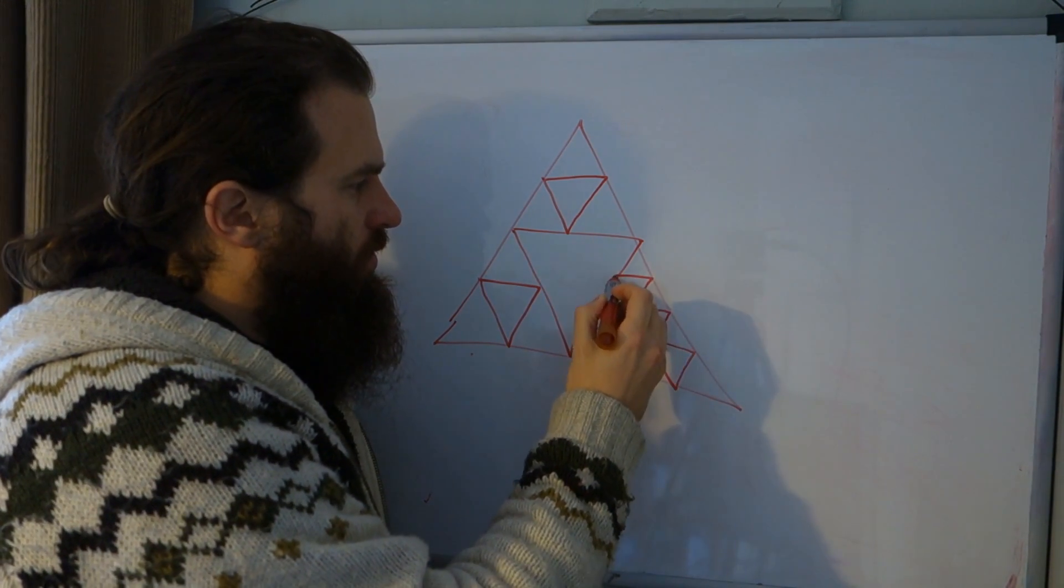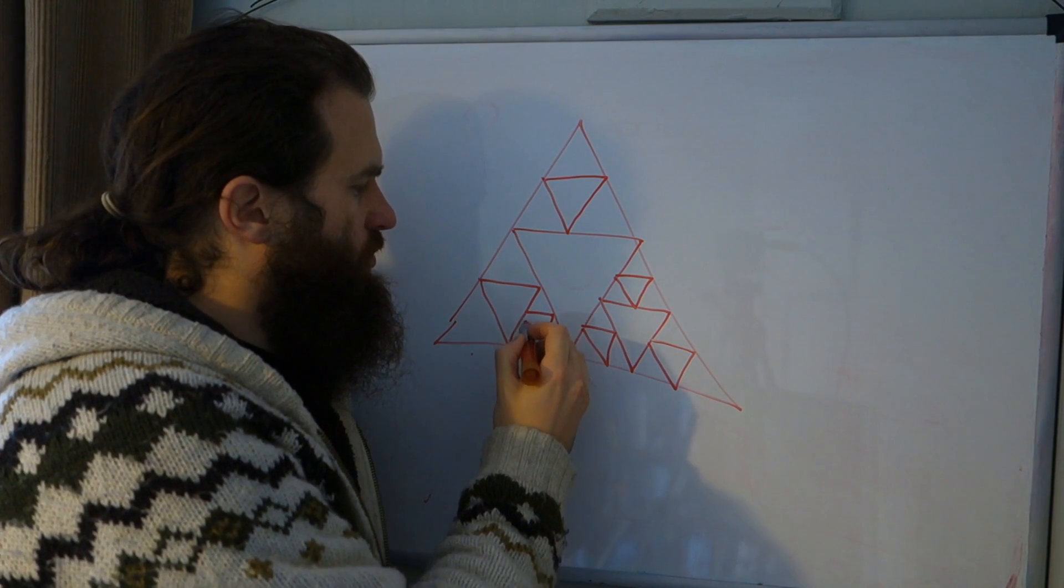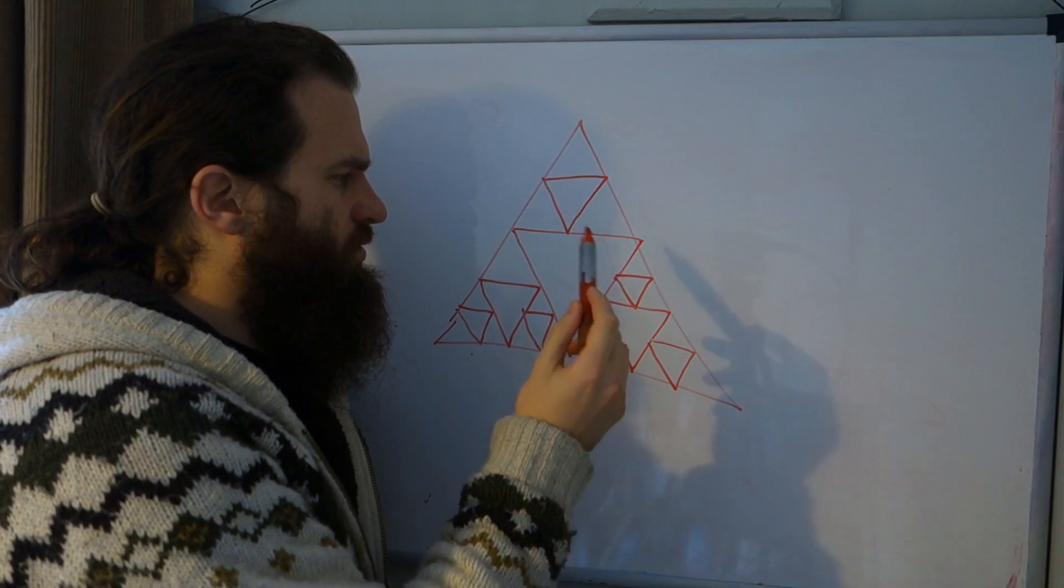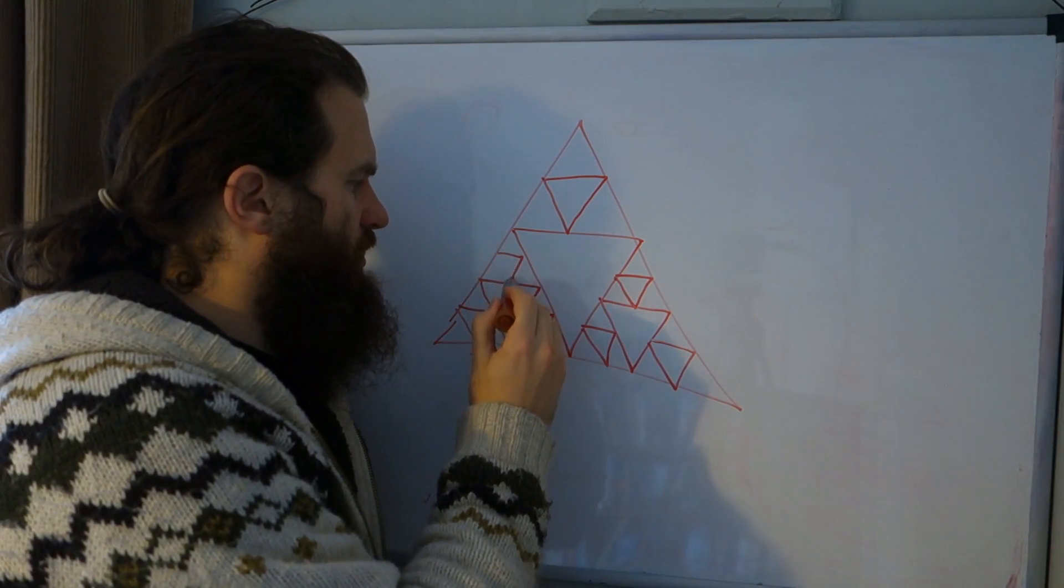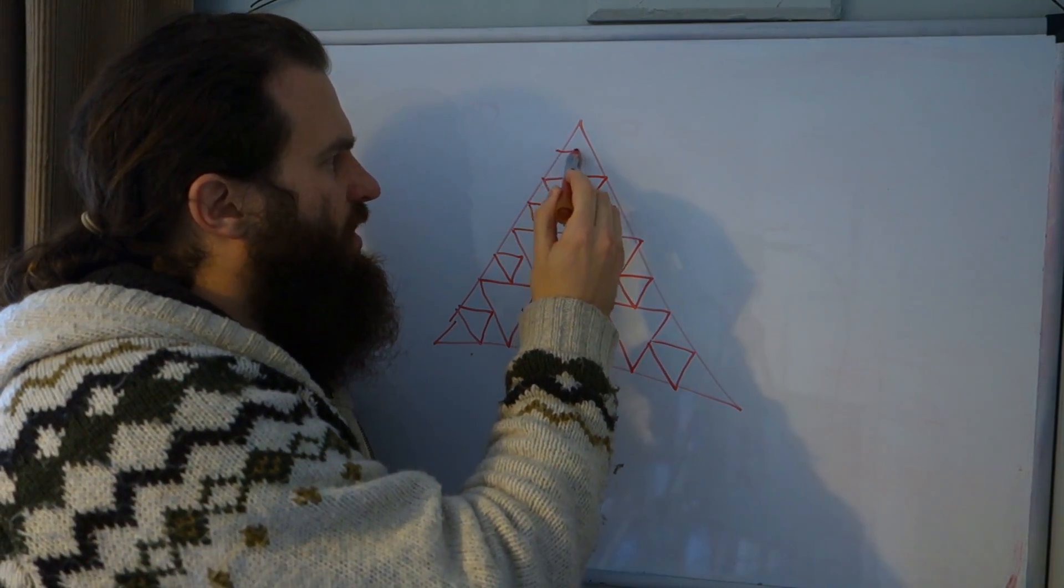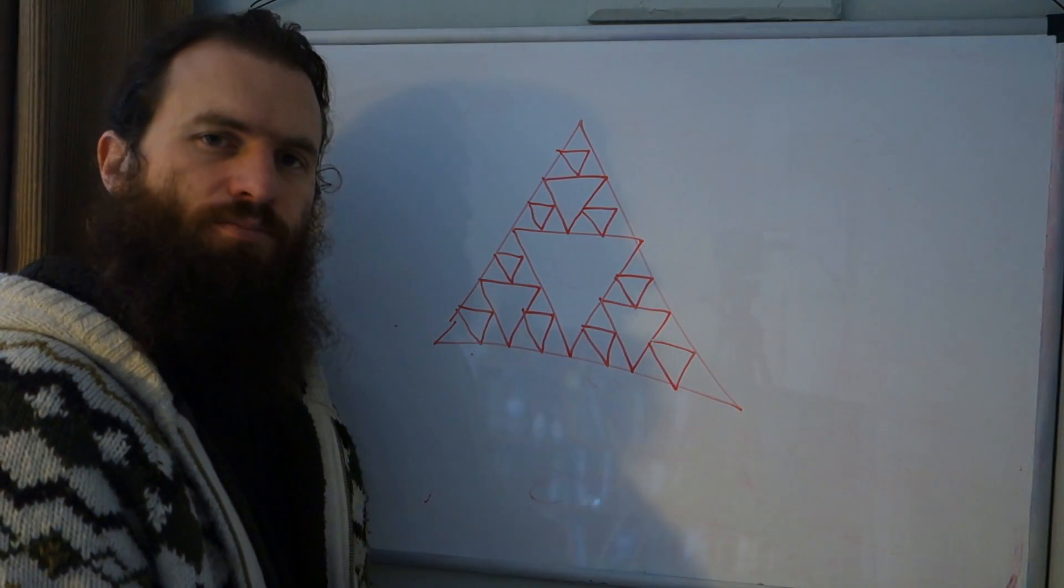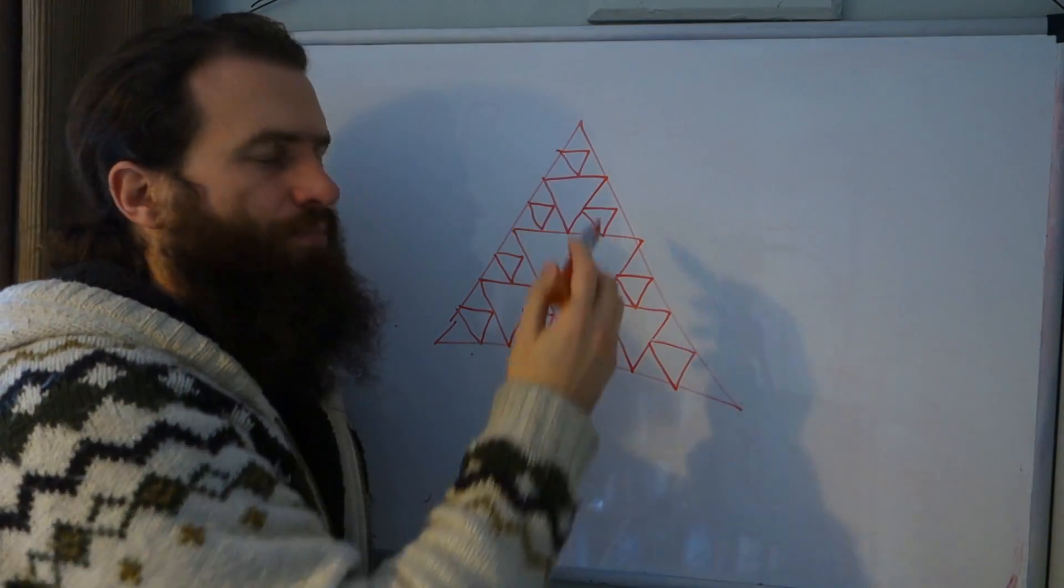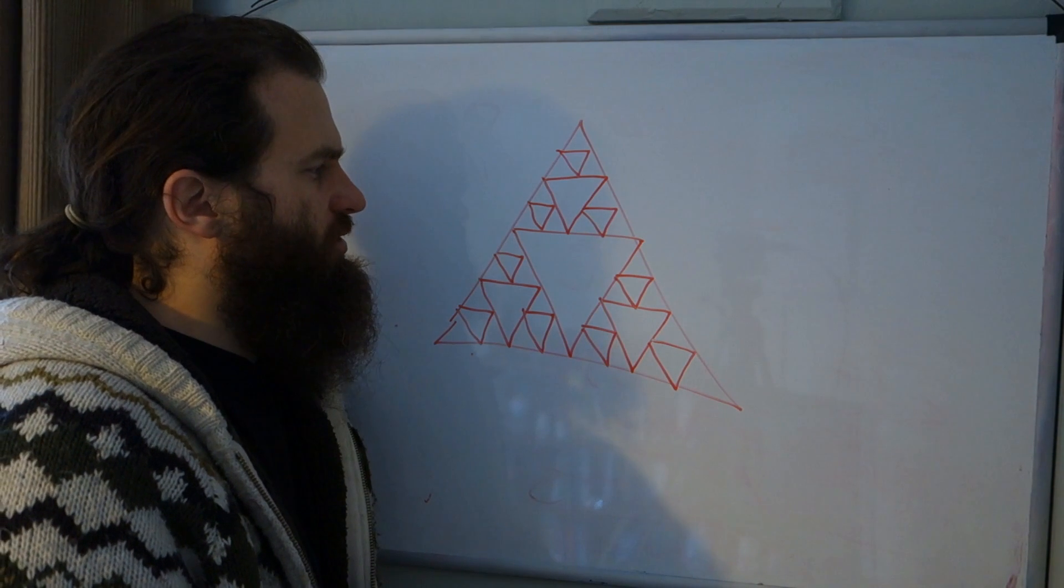So this is a Sierpinski triangle to depth, how many times have I iterated it? One, two, three I think. So this would be depth three. And we can continue this process forever. And of course this triangle here is the same as this triangle here, and that's what's known as fractal self-similarity.